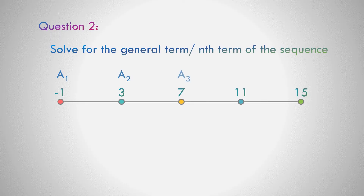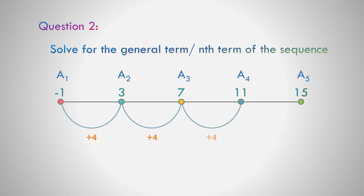Question number 2: If the sequence is negative 1, 3, 7, 11, and 15 — what do you think is the number to be added? Correct. The number to be added from the first up to the last term is equal to 4. Let us write the formula: a sub n equals 4n.